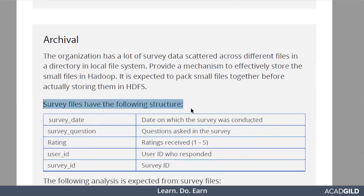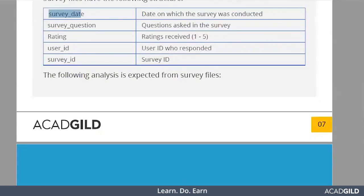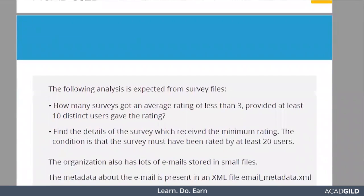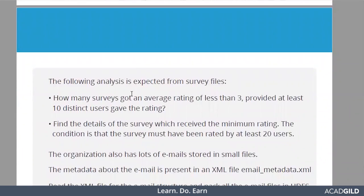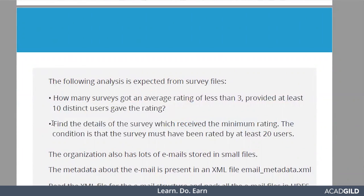There are certain survey files — I will show you later how exactly they look. Survey files have different columns: survey data, survey questions, ratings, user ID, and so on. From this data, we need to find out analyses such as how many surveys got an average rating less than three, provided at least ten different users gave a rating. There is also one more problem statement related to this survey data.